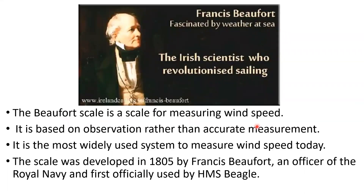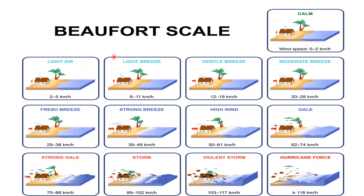The Beaufort scale is a scale for measuring wind speed based on observation rather than precise measurement. It is the most widely used system for measuring wind speed. The scale was developed in 1805 by Francis Beaufort, an officer of the Royal Navy, and was first officially used aboard HMS Beagle — the ship on which Charles Darwin sailed to the Galapagos Islands to conduct research leading to the theory of evolution. Under the Beaufort scale, winds are named from light air and light breeze through gentle breeze, up to hurricane force.